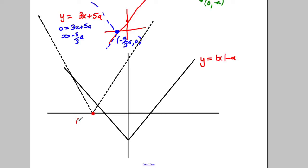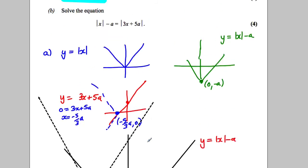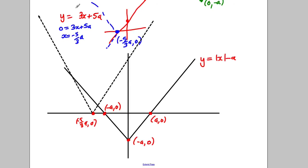For y equals the modulus of x take away a, when y equals 0 we get x equals a or negative a. So the x-intercepts are at (a, 0) and (negative a, 0), and the vertex is at (0, negative a).